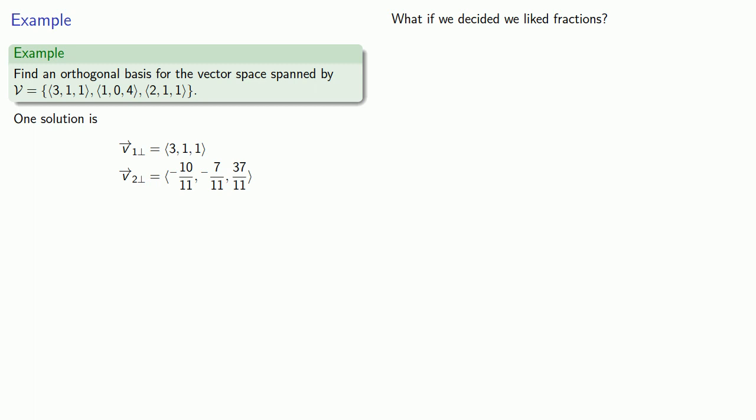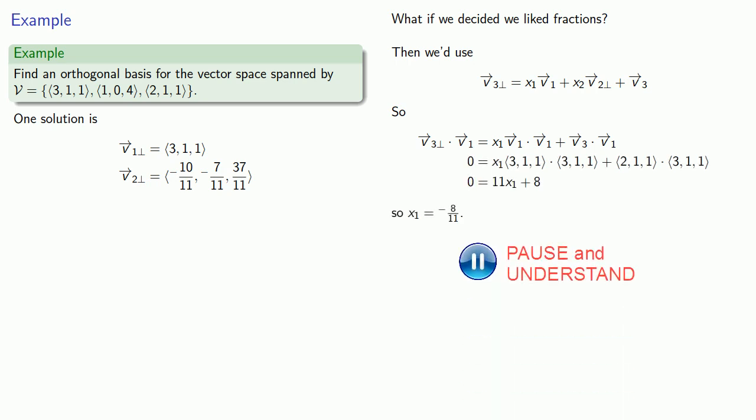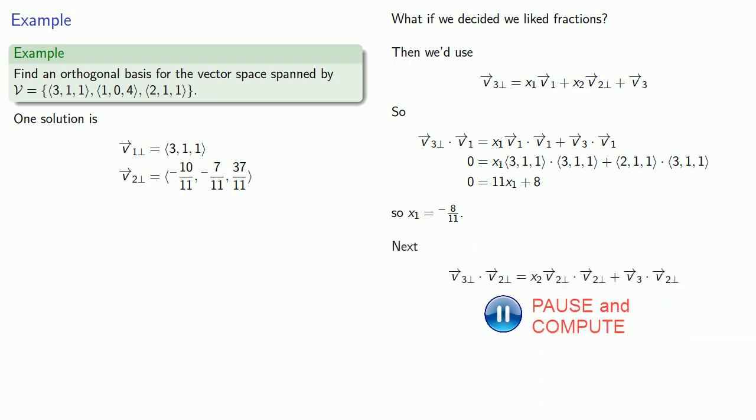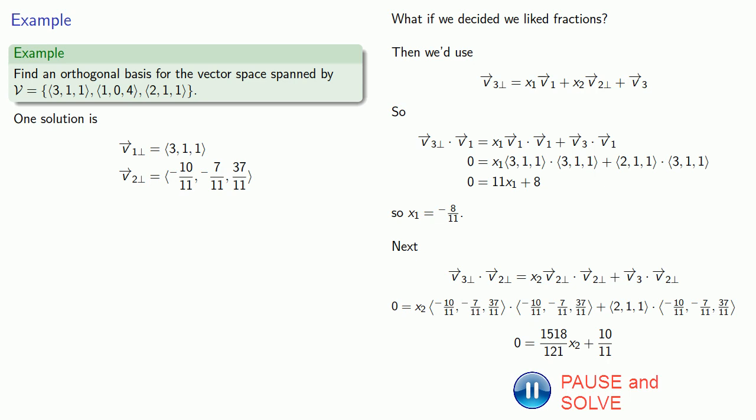And for our third basis vector, we'd want to use linear combination of our basis vectors and v̄₃, not a variable, but v̄₃ itself. So proceeding as before, we'll find our dot product and we'll get an equation which we'll be able to solve for x₁ = -8/11. We'll form our second dot product, and that gives us an equation that we can solve for x₂. And now that we know x₁ and x₂, we can substitute them in to find v̄₃⊥ by our formula.